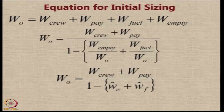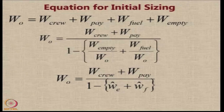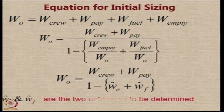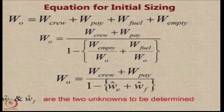The exercise of estimating W zero is now converted into an exercise of estimating only W-e-bar and W-f-bar. These are the two unknowns to be determined.